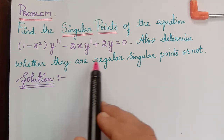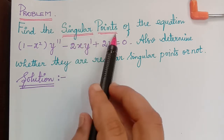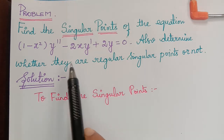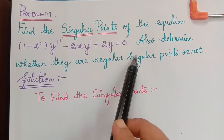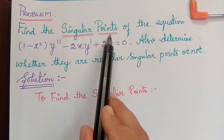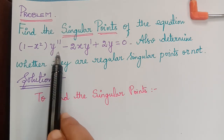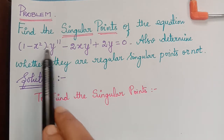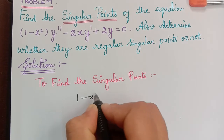Here we have a linear equation from which we have to determine the singular points. The first step is to find the singular points by setting the coefficient of y double dash equal to 0. Always remember: in this equation, we obtain the singular points by setting the coefficient of y double dash to zero. For a higher order equation, equate the coefficient of the highest order term to zero. Here y double dash is the highest order, so the coefficient is (1 minus x squared) and we equate 1 minus x squared to zero.